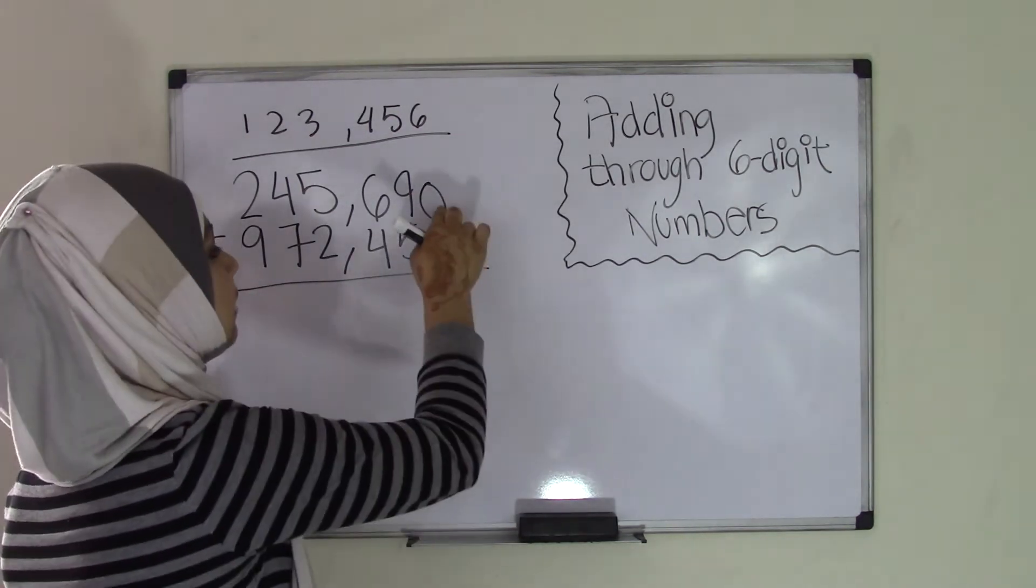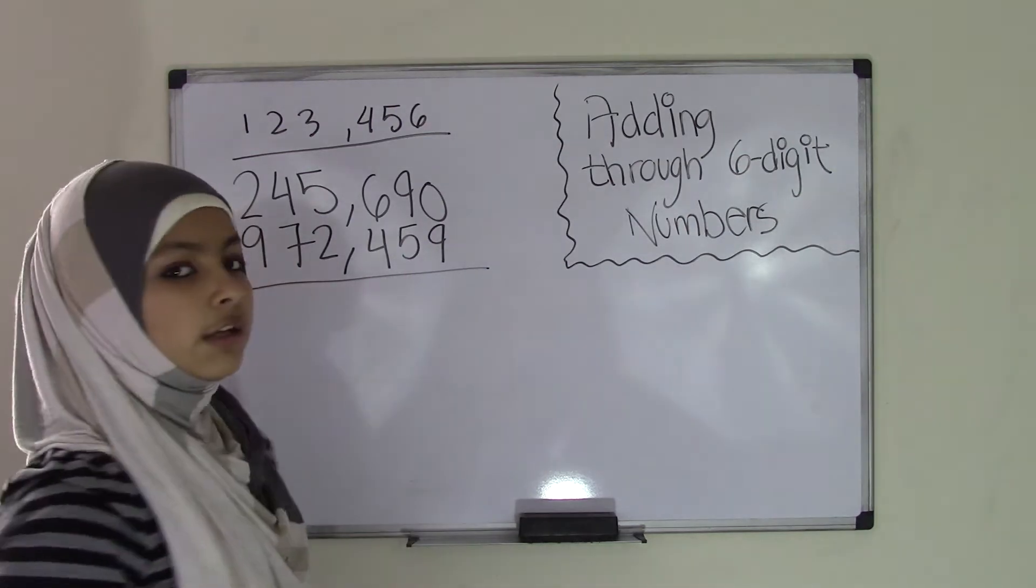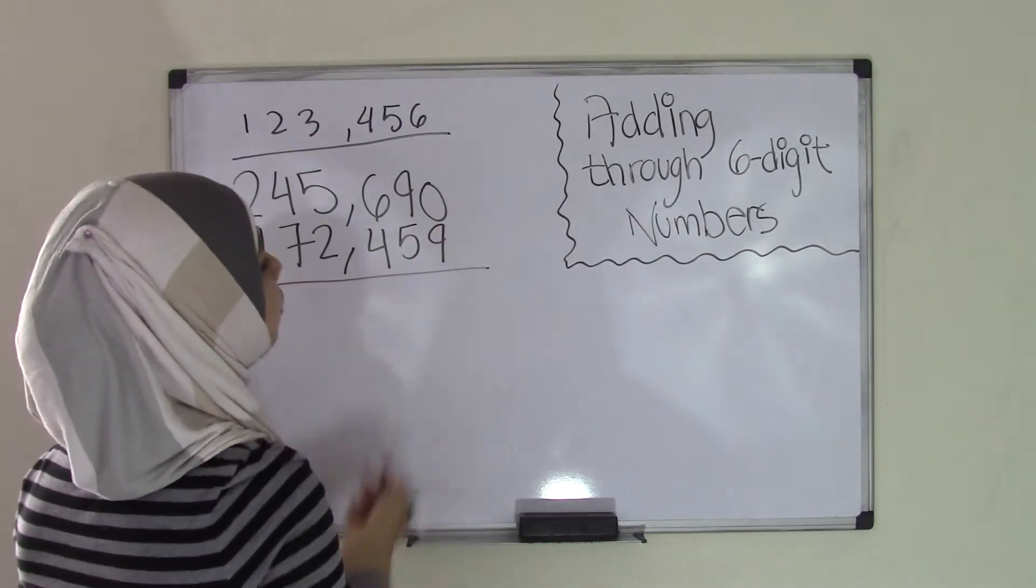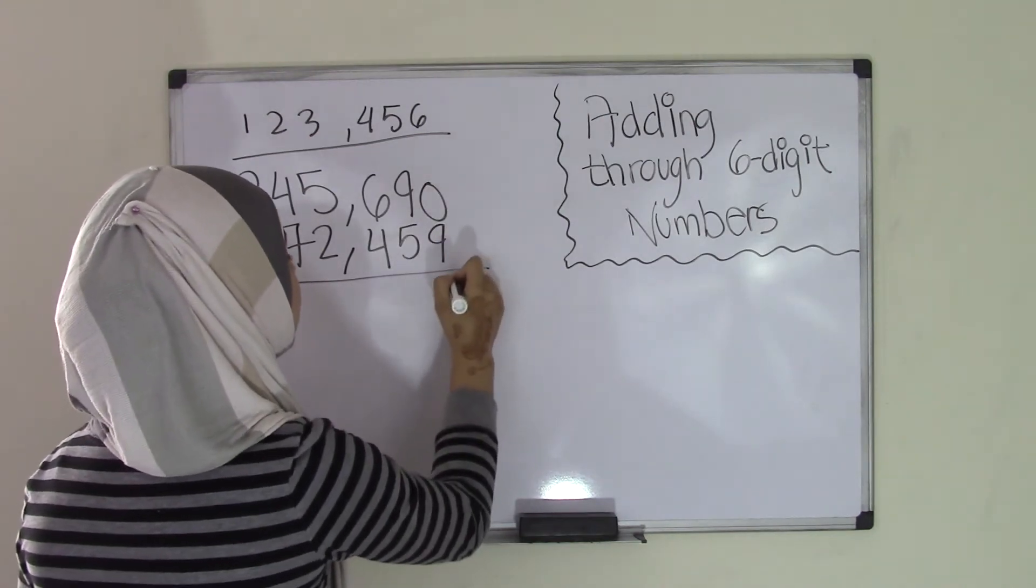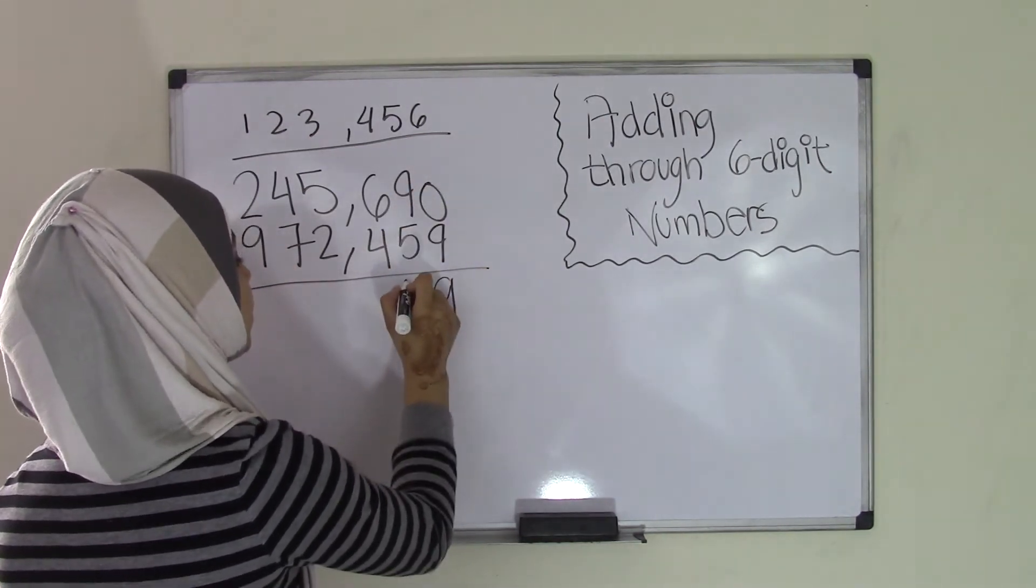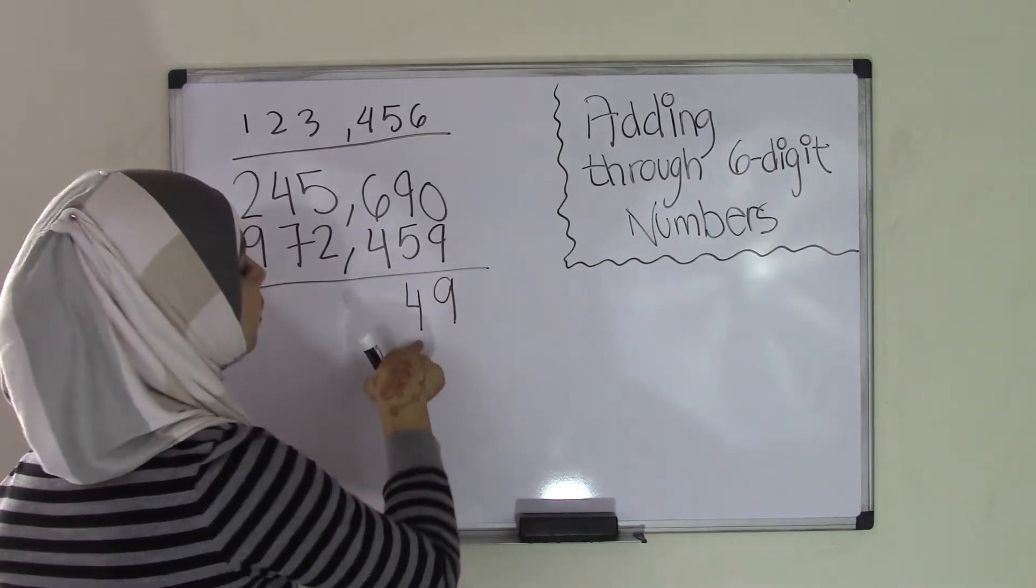And so first is 0 plus 9. Now we all know that anything added to 0 is that same number. So 0 plus 9 or even 9 plus 0 is 9. 9 plus 5 or 5 plus 9 is 14. Now we put the 4 over here,